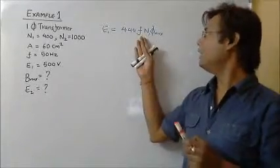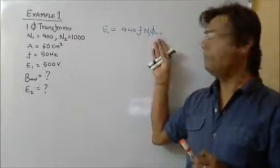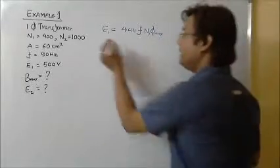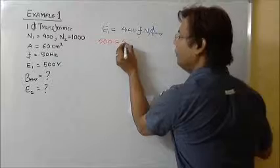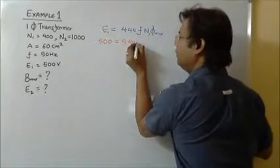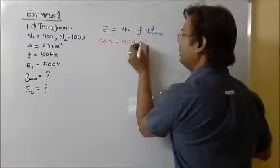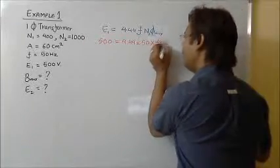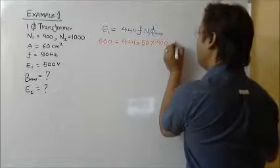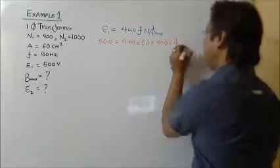So E1 is given to you, F is given to you, N1 is given to you. We will find φmax. E1 is 500 which equals 4.44 into 50 multiplied by 400 into φmax.